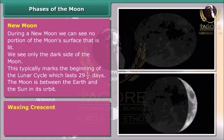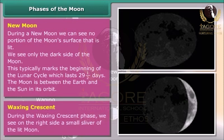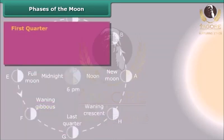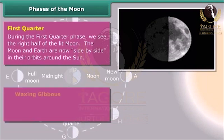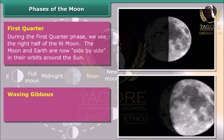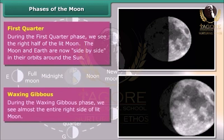Waxing Crescent: During the Waxing Crescent phase, we see on the right side a small sliver of the lit Moon. First Quarter: During the First Quarter phase, we see the right half of the lit Moon. The Moon and Earth are now side by side in their orbits around the Sun. Waxing Gibbous: During the Waxing Gibbous phase, we see almost the entire right side of the lit Moon.